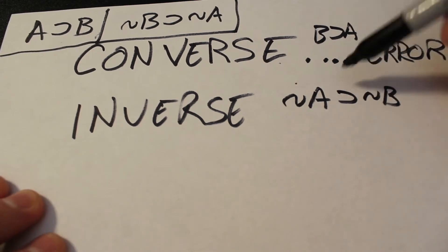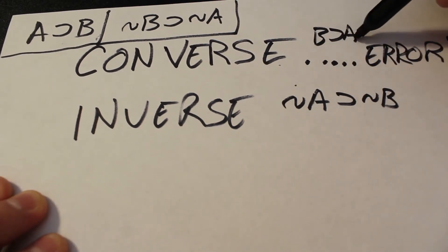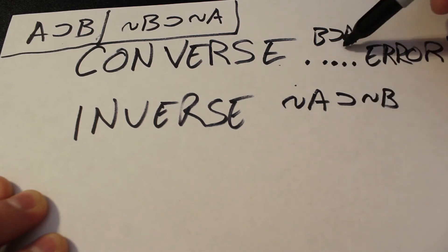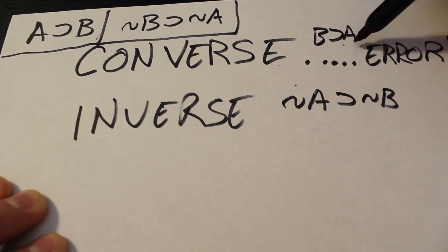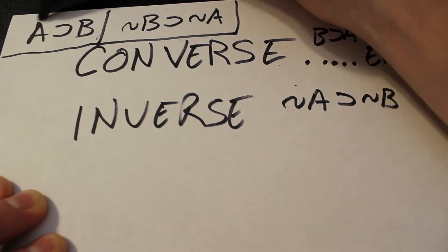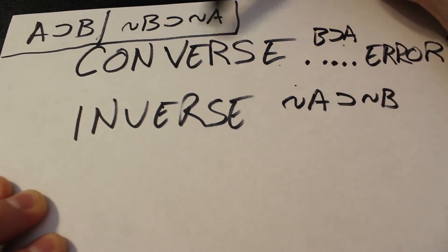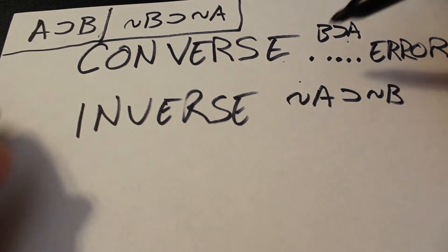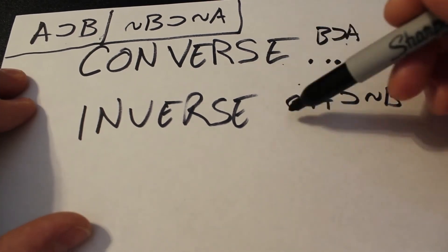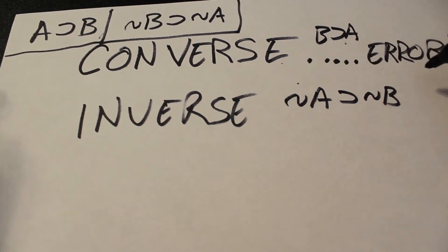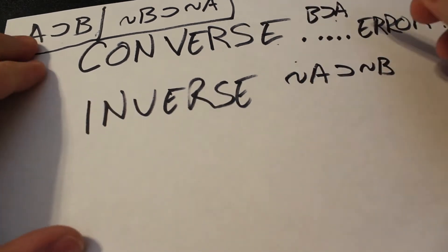The converse is not necessarily true based on just some A implies B. And the inverse — not A implies not B — is not necessarily true based on A implies B either. We can figure that out because the converse says B implies A, and the inverse says if not A then not B, which is the contrapositive of B implies A. So the converse and inverse are contrapositives of each other, but they lead you to a possible error in reasoning. You cannot rely on them as absolutes.